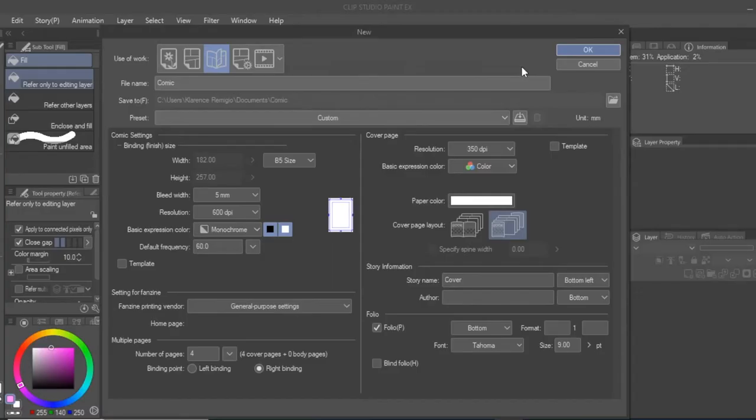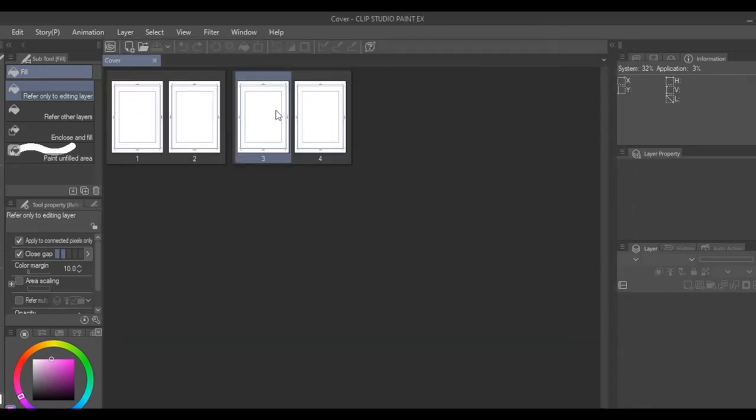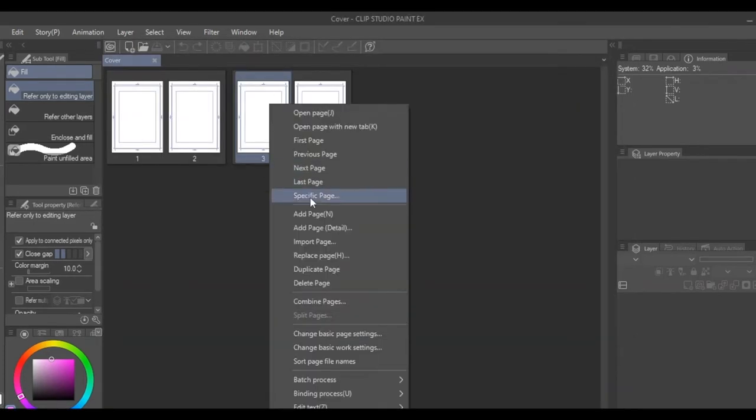If that wasn't straightforward enough, the digital method on Clip Studio Paint X is even more simple. Just open up your comic file with multiple pages, right-click the pages where you want your spread, and click Combine Pages.